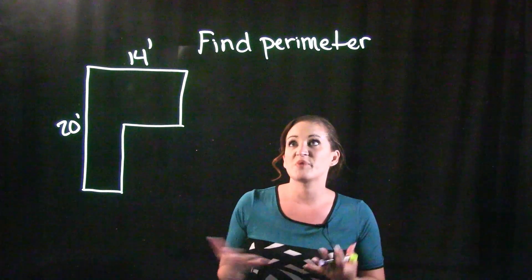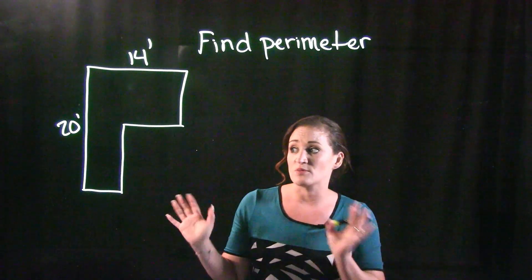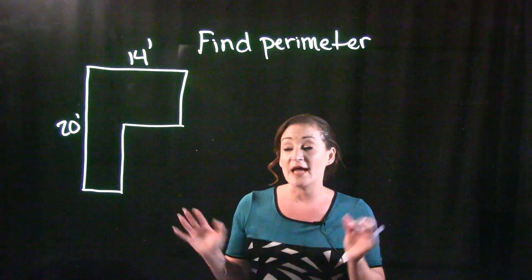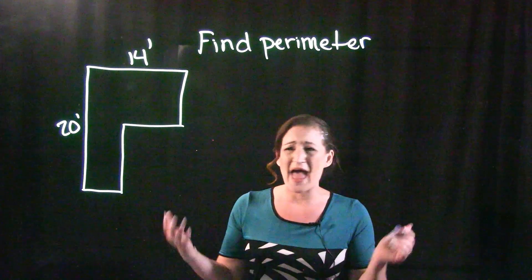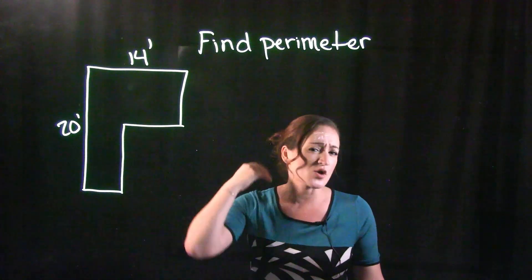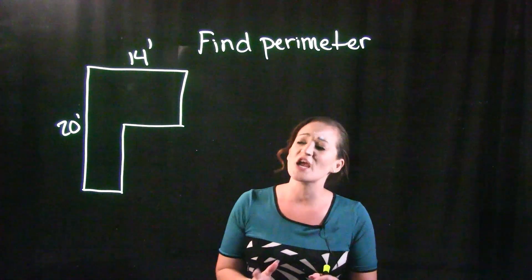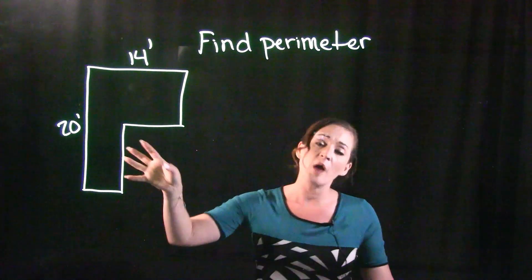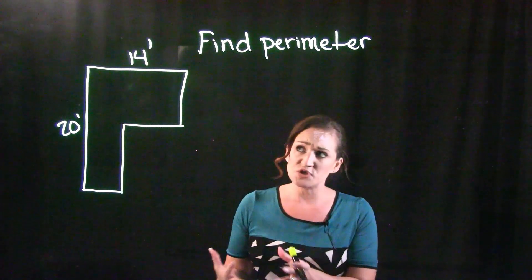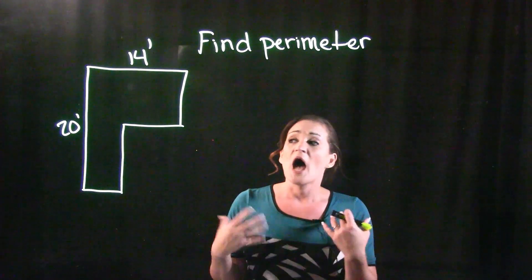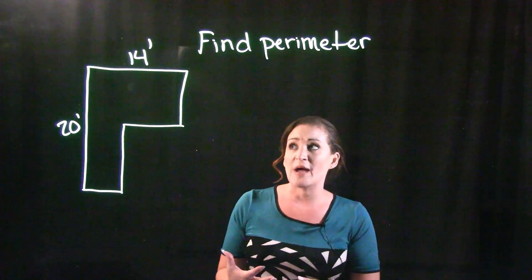When it comes to finding perimeter, areas, or volume of shapes that we're not so familiar with, or shapes that don't have a designated formula for, we have formulas for rectangles, squares, all sorts of different shapes. But when we have interesting shapes that we don't have specific formulas for, we might have to do a little bit of backtracking or tweaking to the information that we already know about it.